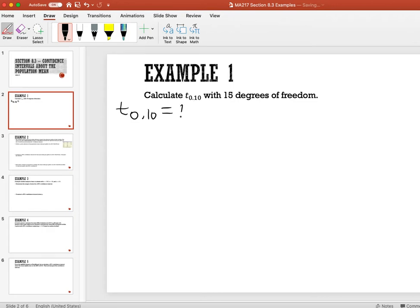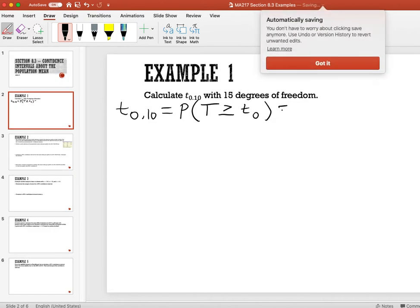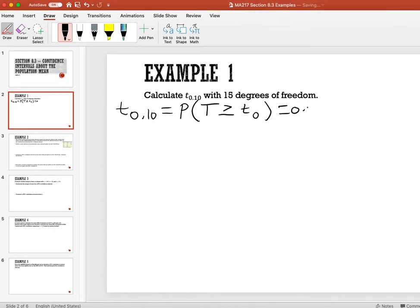This is equal to the probability that the t value is greater than or equal to some critical value. We don't know what that number is; I'm going to abbreviate it as t sub 0, and this equals 0.10.